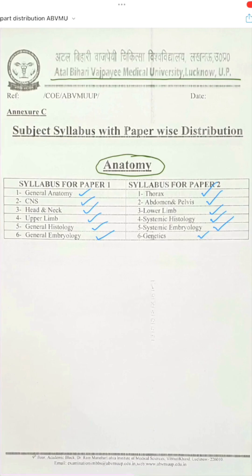As far as the gross part is concerned, remember: head and neck, CNS, and upper limb are in paper 1, and thorax, abdomen, and lower limb will be in paper 2.